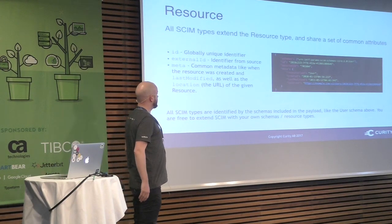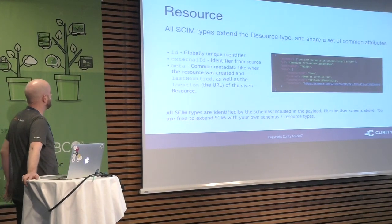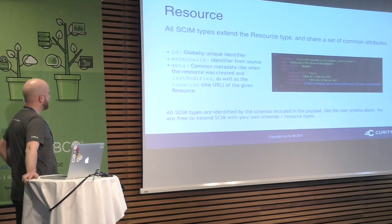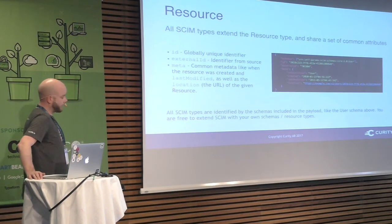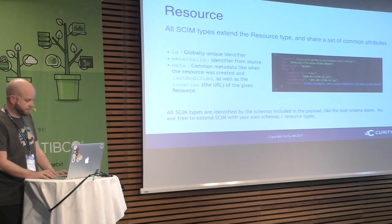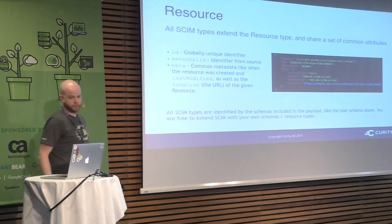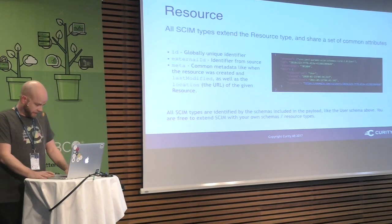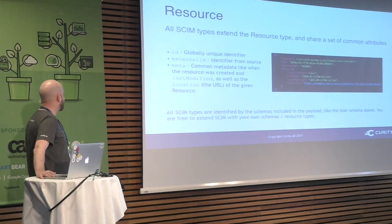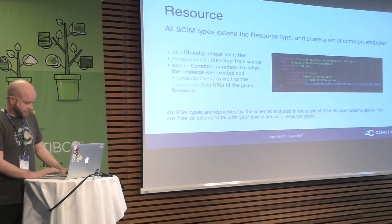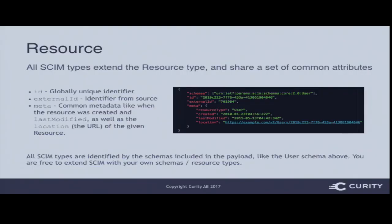There's also an external ID, which is an identifier used from the source where you got this data — maybe it's an ID from your database, a Twitter handle, or wherever you got this user or resource. You also have common metadata like when the resource was created, when it was last modified, and where it can be found. All SCIM types are identified by the schema, so you know when looking at a document what you're looking at — in this case, a user.